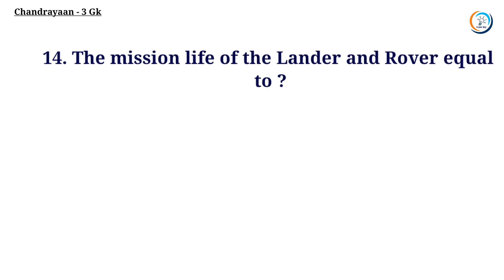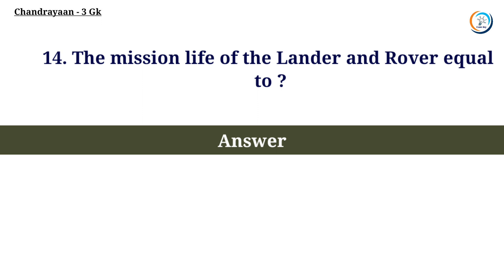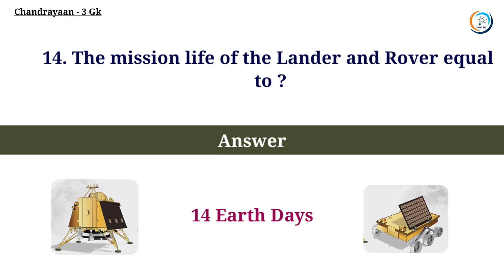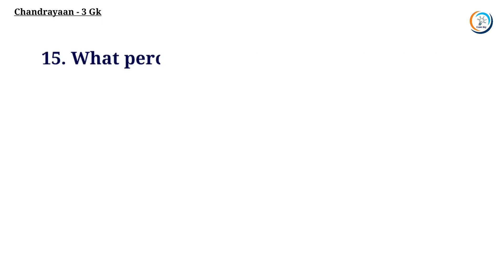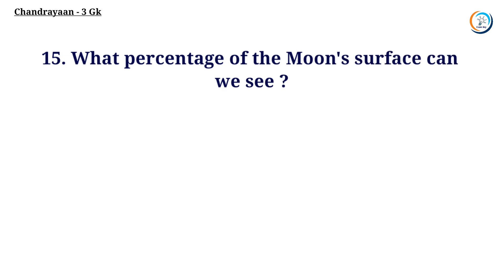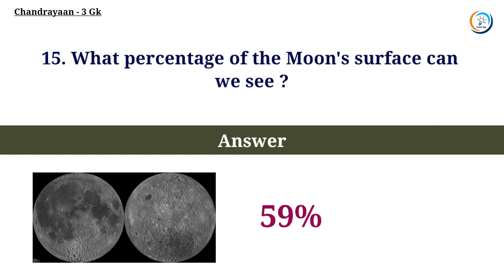What is the mission life of the lander and rover? Answer: 14 Earth days. What percentage of the moon's surface can we see? Answer: 59%.